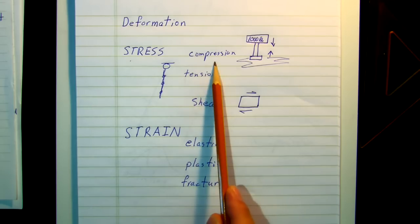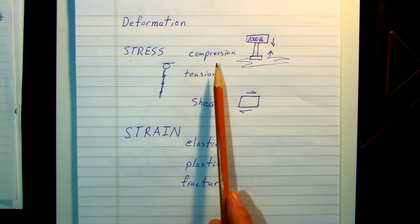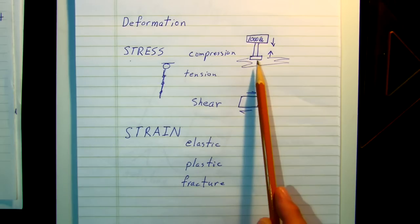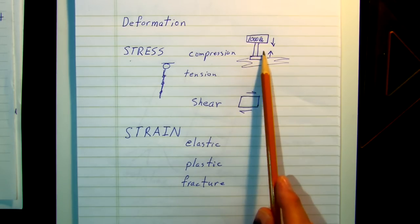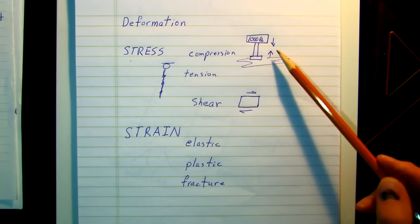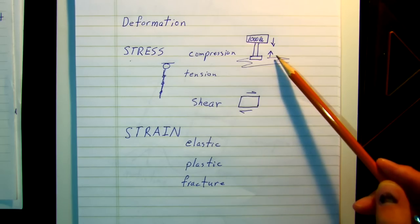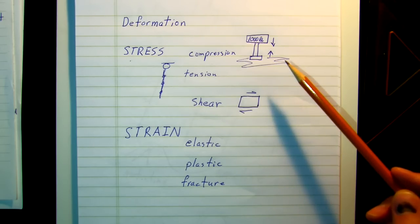First, there's compression. The walls that hold up the roof of your house are under compression. Here we have a column holding up a weight. Notice that the force of the weight is down and the force of the floor is pushing upward against one another. This is compression.